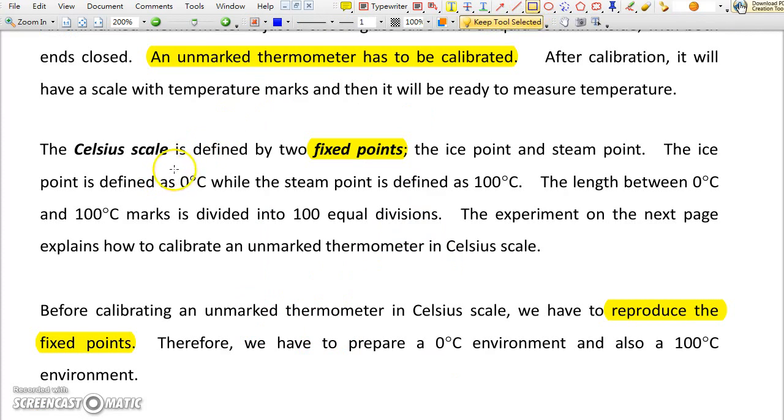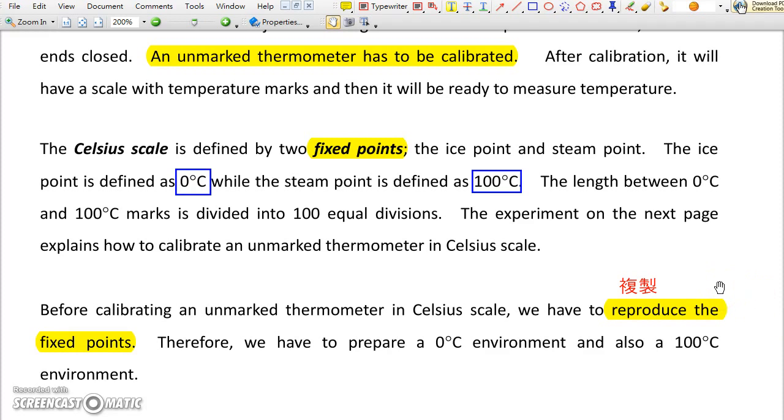These two temperatures are called fixed points. These two temperatures are 0 degree Celsius and 100 degree Celsius. Why we choose these two temperatures as fixed points? Because we can reproduce these temperatures very easily.